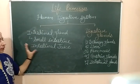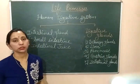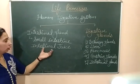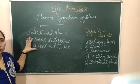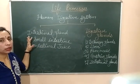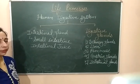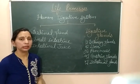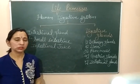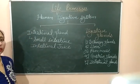The intestinal juice helps in the complete digestion of protein, fat, and carbohydrates. After complete digestion in the small intestine — through its three parts, duodenum, jejunum, and ileum — the fully digested food is transported to the large intestine where the absorption process is completed.